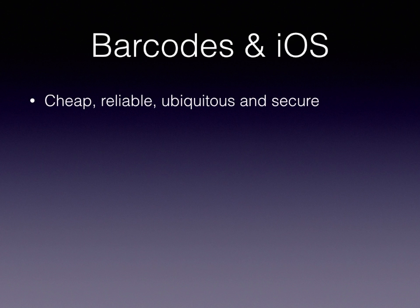It's reliable because you don't need to exchange batteries in your beer can — it just works. It's ubiquitous, meaning every beer has a barcode. And it's secure — that's another thing nowadays with privacy. If you had an RFID chip, somebody might spot what brand of beer you're drinking from a distance, but with a barcode they have to actively scan it, so that's perfectly secure.